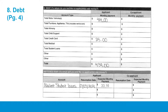If you or your co-applicant have any debt accounts that are deferred, please list them in the deferred debt table below the debt table. List the date you anticipate starting or resuming payments on the debt, as well as your expected monthly payment requirements.